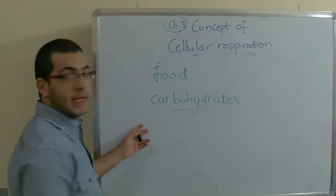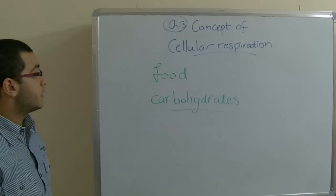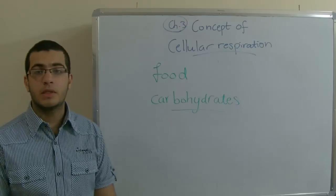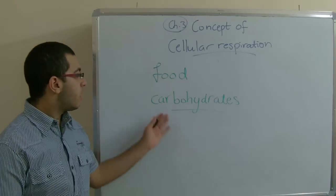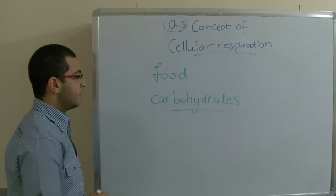So in the plants these carbohydrates are manufactured by means of photosynthesis process while the animals and humans eat and obtain these from the plants or the animals.